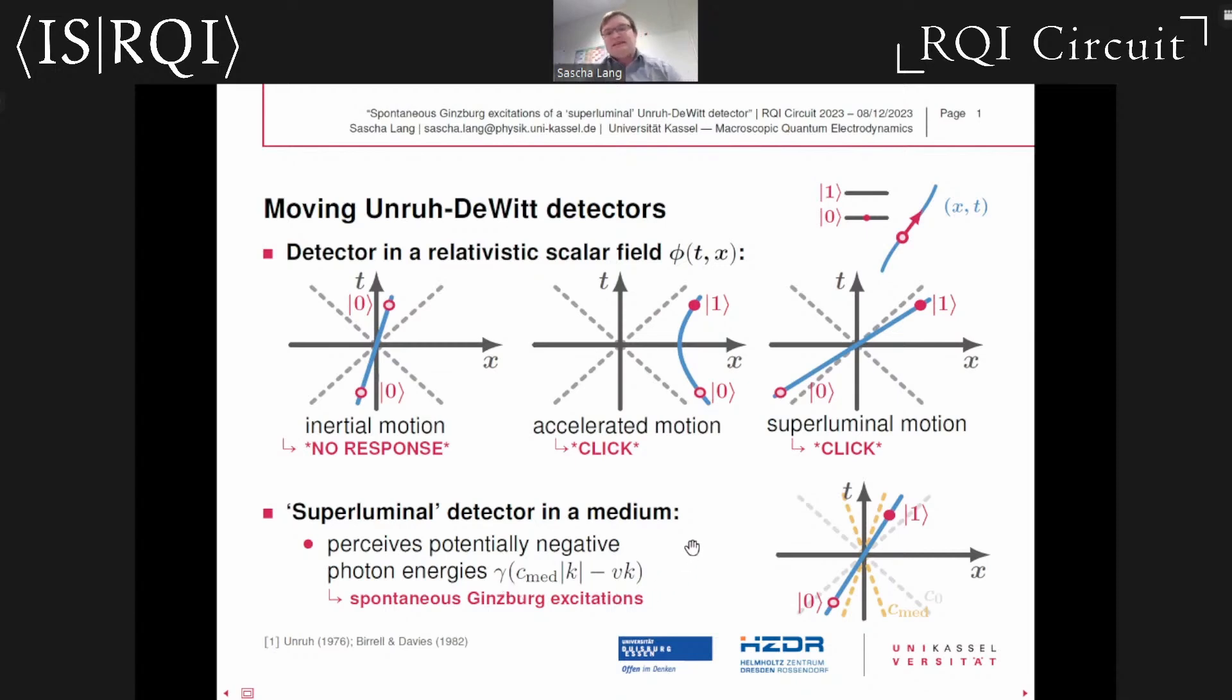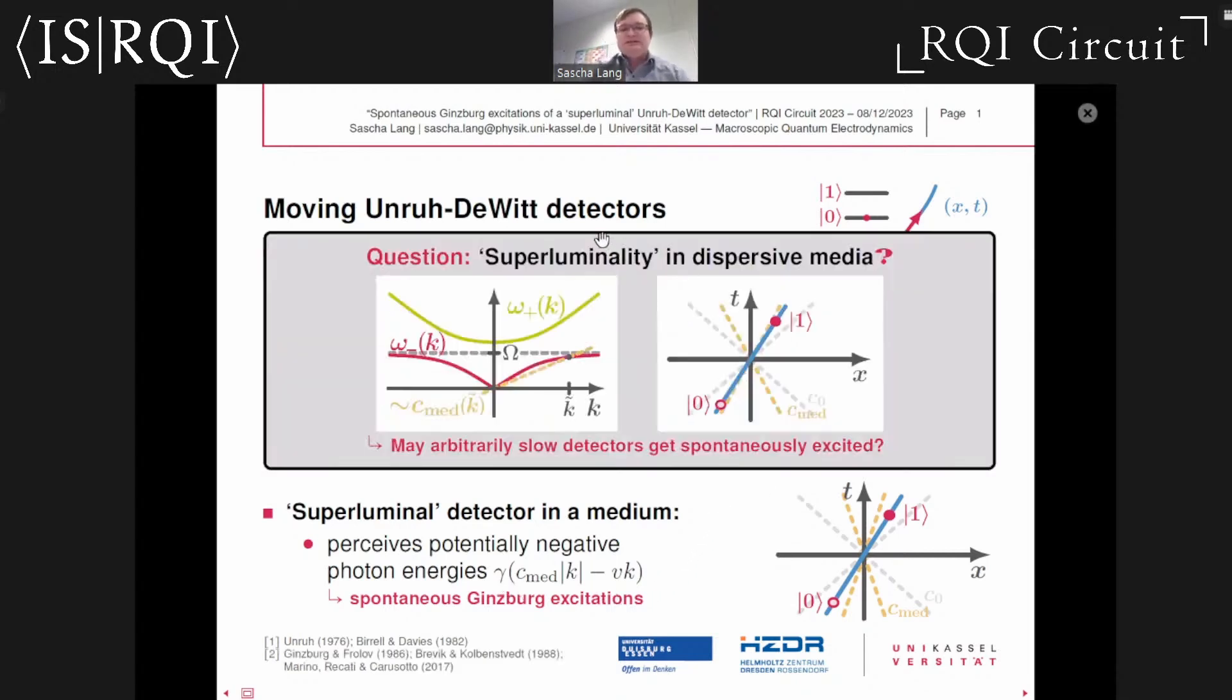This Ginzburg effect has been studied before, but we will consider the situation of a superluminal atom or particle detector moving in a dispersive medium. As a dispersive medium, we will consider a toy model called the Hopfield model. In the simplest version, it uses a dispersion relation with two discrete energy bands, omega minus and omega plus, separated by a band gap just above the resonance frequency omega of the medium.